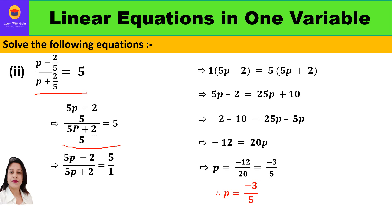We have fraction divided by fraction, so we multiply by 5/1 to cancel out the 5s, giving (5p minus 2) upon (5p plus 2) equal to 5/1, since 5 can be written as 5 by 1. Now this equation will be solved by cross multiplication.